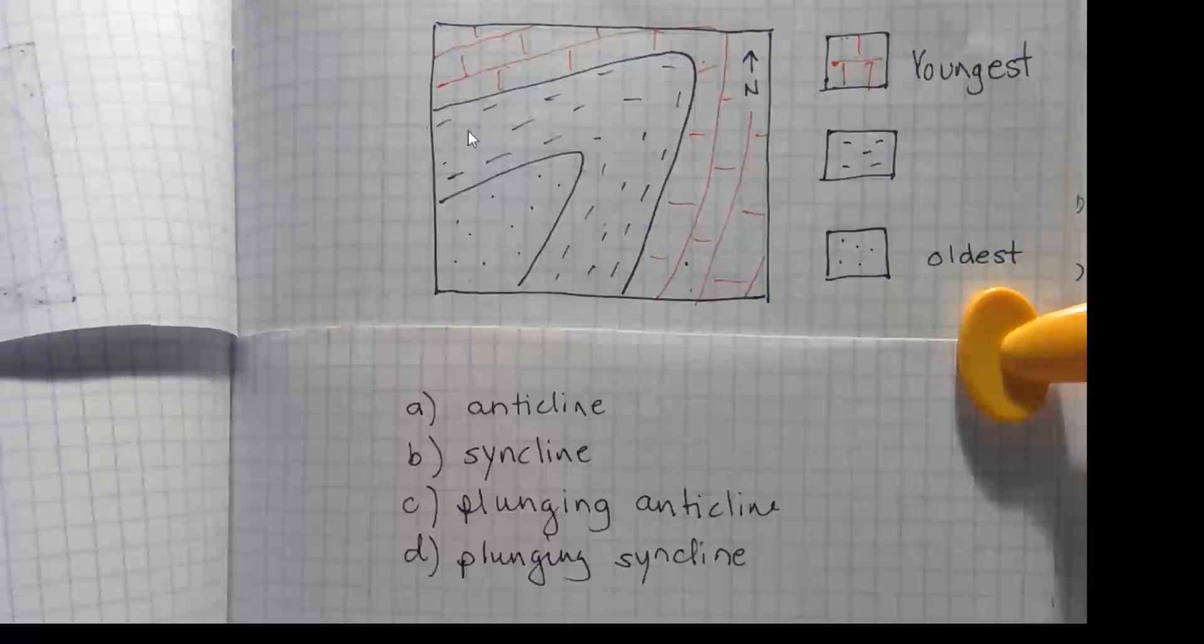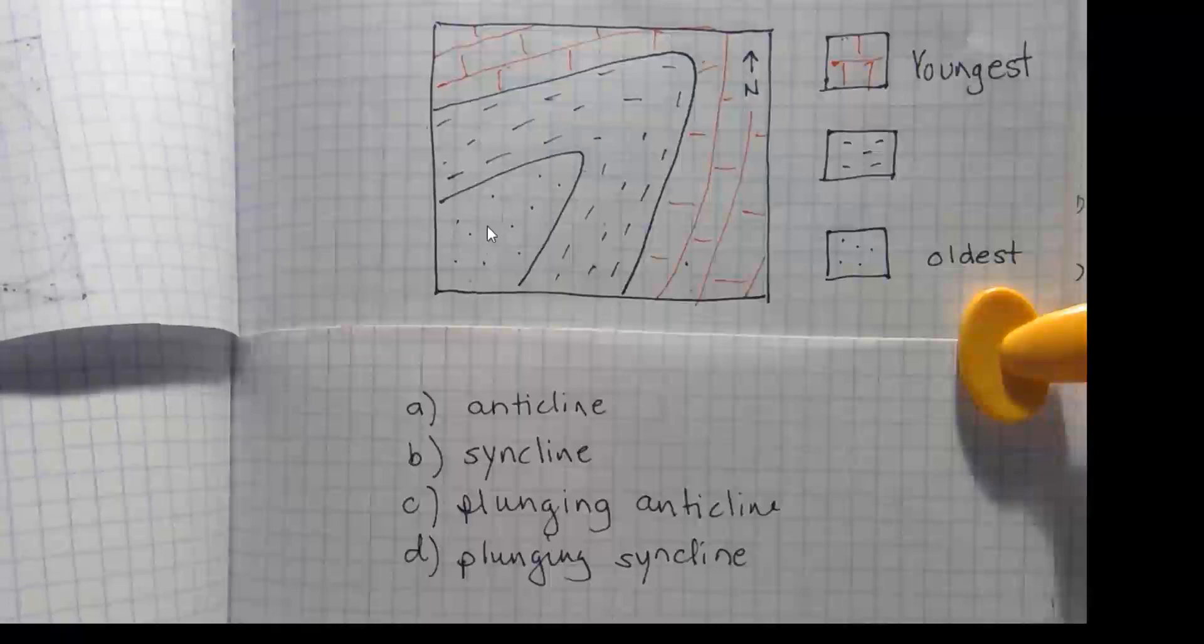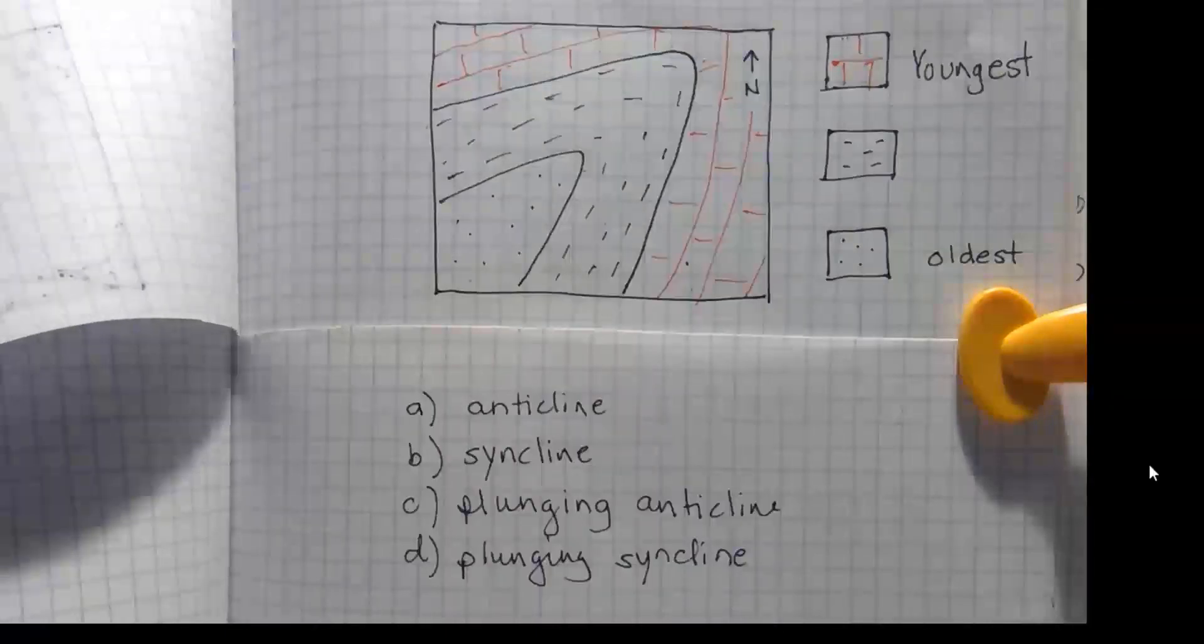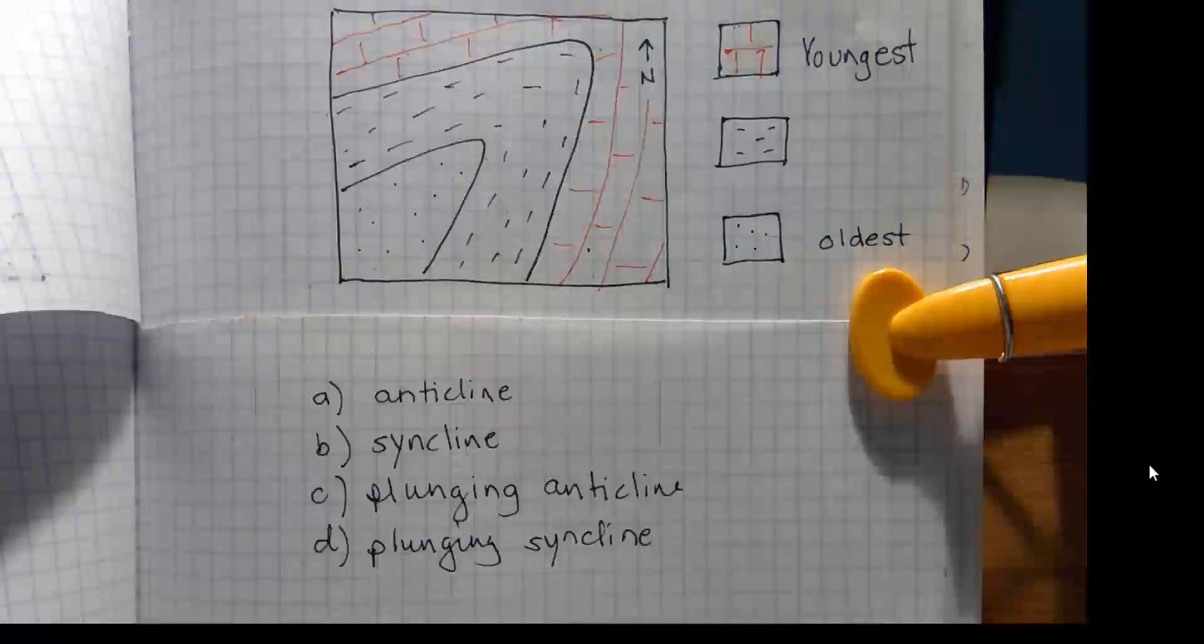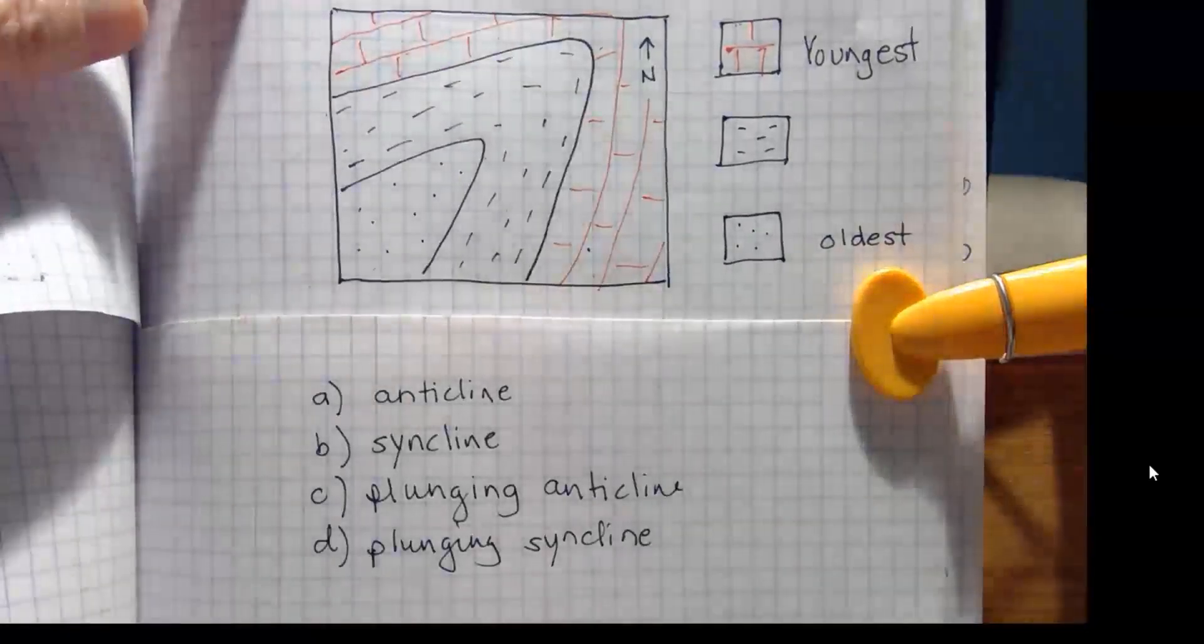We know it's a plunging fold because of the wraparound outcrop pattern, making a V shape. And that would be a plunging anticline. A plunging anticline, answer C, because our oldest rock unit is exposed along the fold axis. And we have younger and younger rock formations out on the limbs. The arch-like anticline pushes the oldest rocks up and they'll be exposed by erosion in the center of the fold along the fold axis.